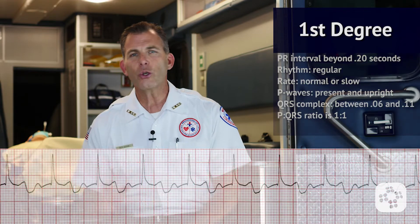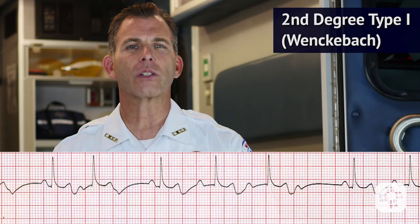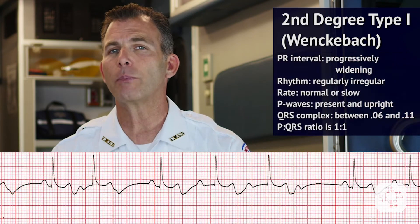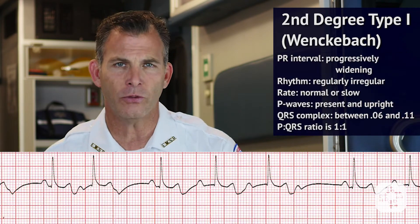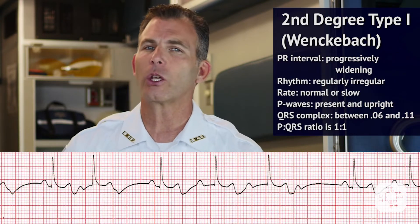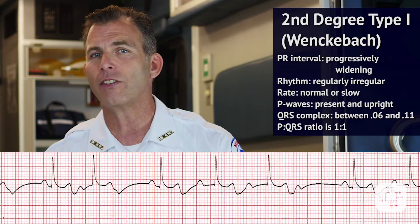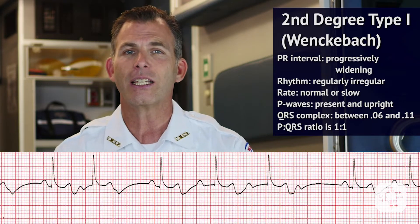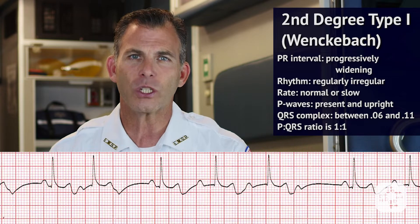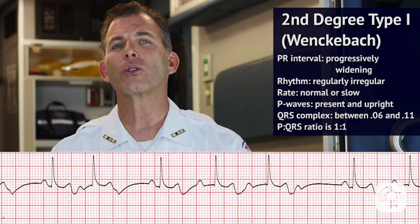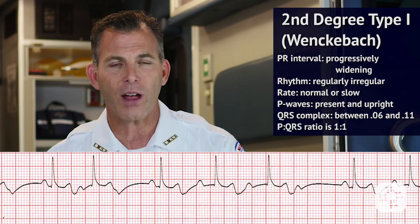There is usually minimal clinical significance with this form of heart block. A second degree, otherwise called Mobitz type 1 block, is characteristic of having a progressively widening P to R interval, which is then followed by a QRS complex that is progressively delayed at the AV node until it is completely absent altogether, showing only a P wave but no QRS following it.